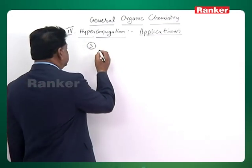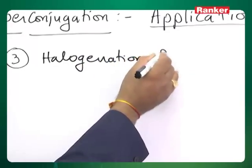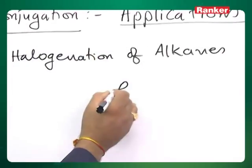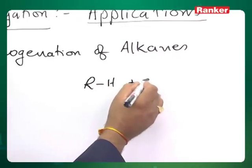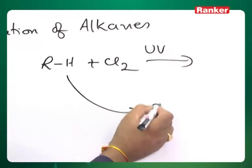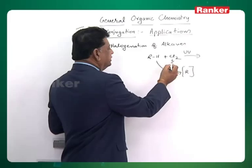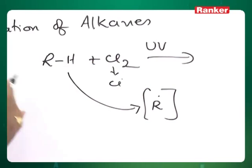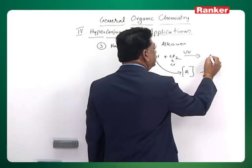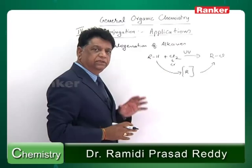Let us see some more applications like halogenation of alkanes. As we have seen, when alkanes are treated with halogens like chlorine in presence of UV light, it first gives the R dot. The first Cl2 breaks up — CL dot is formed, that CL dot attacks, and HCl is formed as a byproduct. R becomes R dot, which then turns into the product RCl. So in halogenation, the intermediate is a free radical.